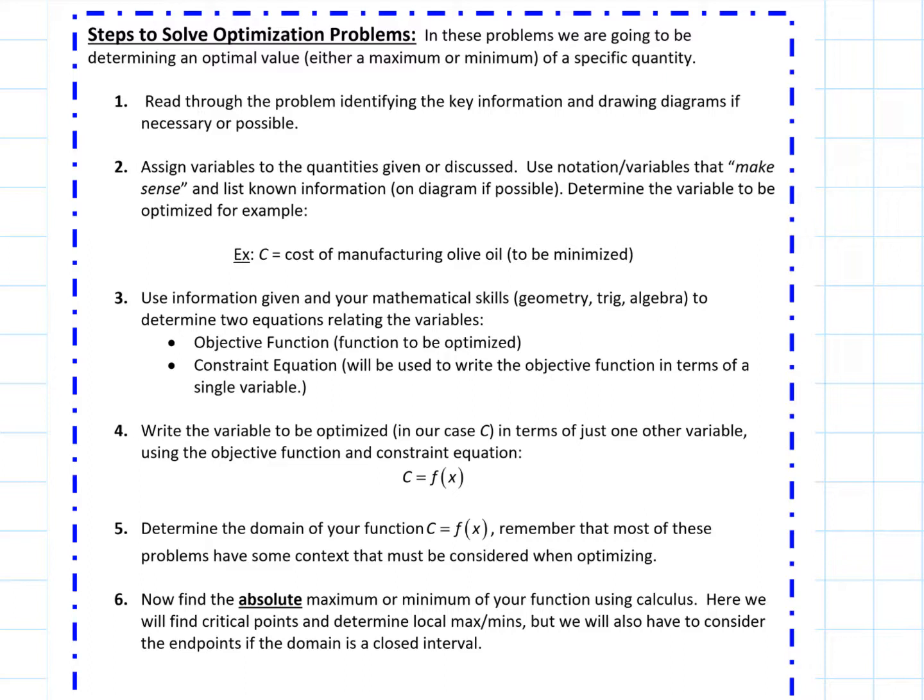To create a function, which is what we're going to do. So first thing we're going to have to do is identify key information, assign some variables to the quantities, and then use that information to create an objective function, the function that we want to optimize, the function that we want to find a maximum for or a minimum for. And we're going to have to use some constraints or constraint equations so that we can create a function of a single variable. So we do need to have a function of just one variable.